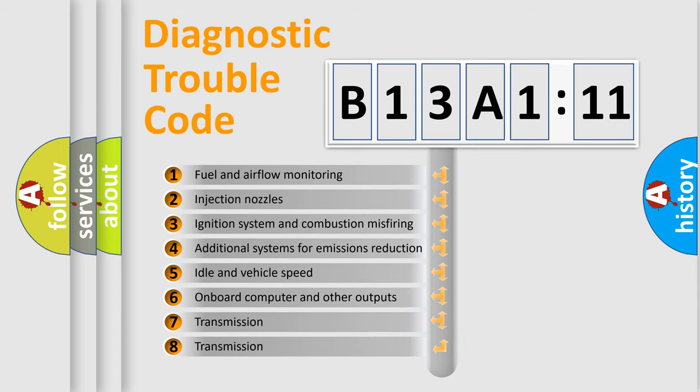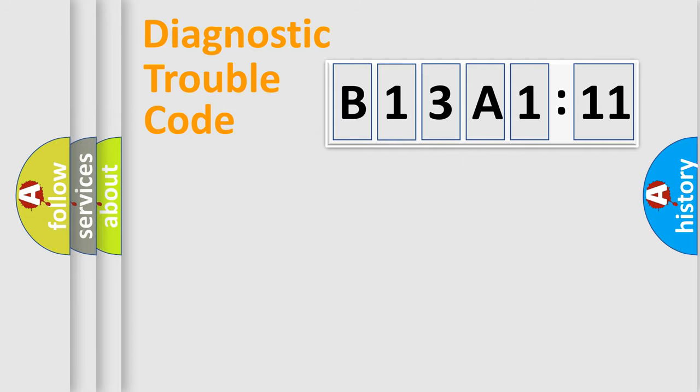The third character specifies a subset of errors. The distribution shown is valid only for the standardized DTC code. Only the last two characters define the specific fault of the group.